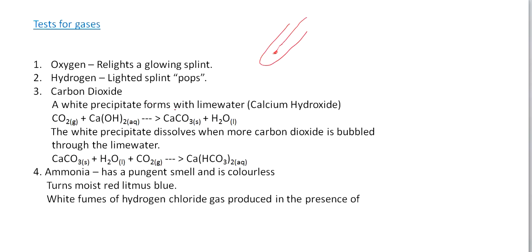To test for carbon dioxide, we use lime water — though I want you to use the term calcium hydroxide. If we bubble carbon dioxide through calcium hydroxide, we get a white precipitate. Carbon dioxide + Ca(OH)2 → CaCO3 + H2O. The white precipitate is calcium carbonate.